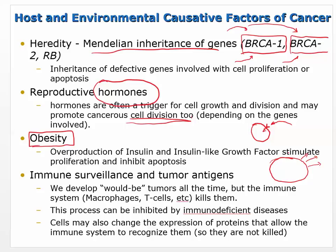Immune surveillance: we develop tumors all the time, but our immune system takes them out — macrophages, T cells, and natural killer cells will destroy a cell that doesn't look right. This process can be inhibited by immunodeficient diseases. People with AIDS often develop tumors because their immune system can't stop them. Cancer cells may also change protein expression to avoid being killed by the immune system, expressing fetal antigens that signal they belong.